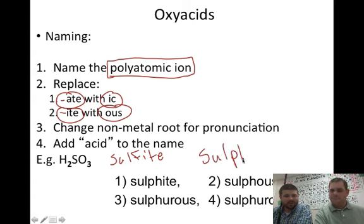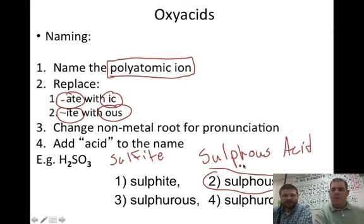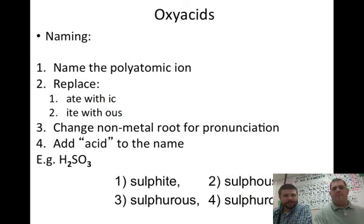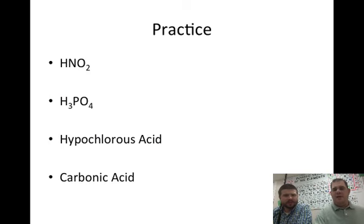So -ite's go to -ous. So this would be sulfurous acid. All right. So that's the trickiest part here. So sulfurous acid. So that sulfite went to sulfurous acid. And I think I don't know why all this stuff is down here. But anyway, I'm just changing the polyatomic and changing the ending. And then I'm putting the word acid. That's it.